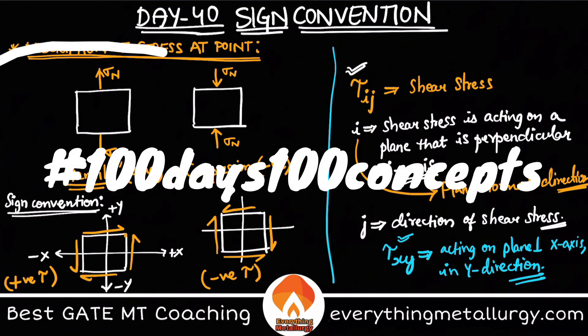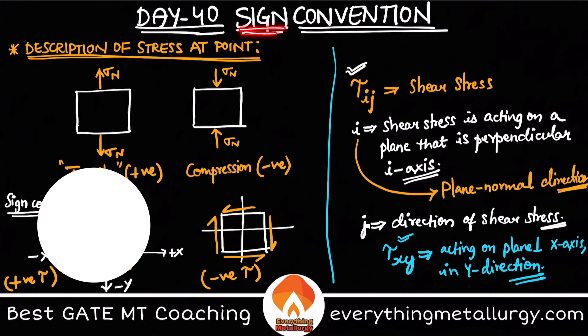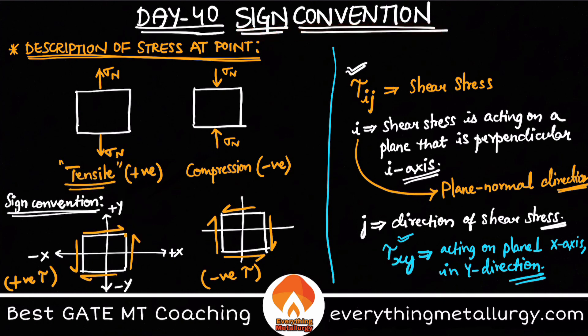Hello guys, welcome to Everything Metallurgy and welcome to day 40 of 100 days, 100 concepts. Today in this video I want to explain sign conventions of the stress tensor. I've already briefly explained this in the stress tensor video, but I got a query about how we can take a particular shear stress as positive or negative. I've covered this in Mohr's circle but I want to put this topic in a separate video.